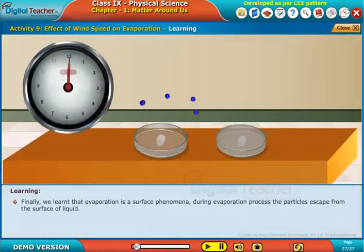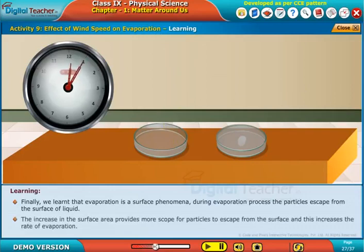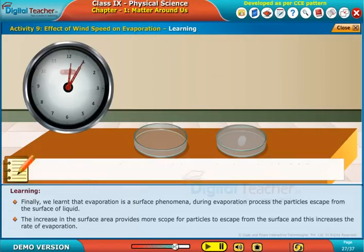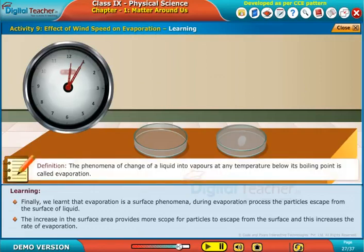Finally, we learned that evaporation is a surface phenomena. During evaporation process, the particles escape from the surface of liquid. The increase in the surface area provides more scope for particles to escape from the surface, and this increases the rate of evaporation. The phenomena of change of a liquid into vapors at any temperature below its boiling point is called evaporation.